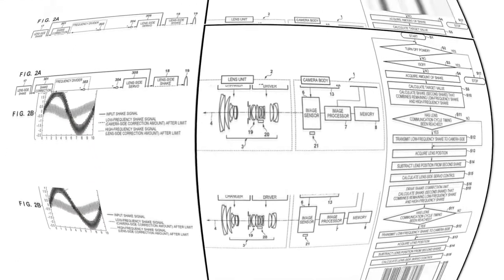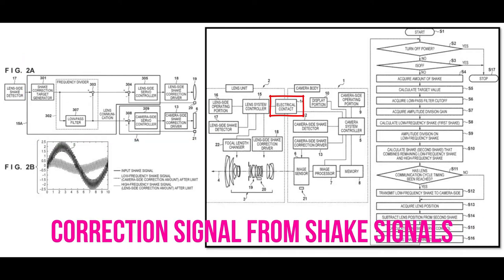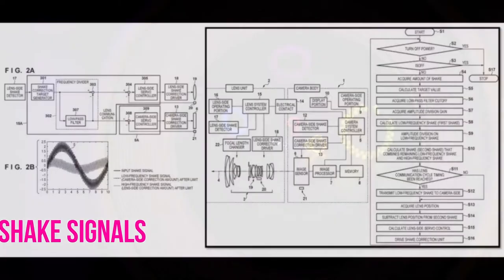Connected circuitry explains the dependencies and their functions. Both units are connected with the electrical contact. Core to this invention is to build correction signal from low frequency band signals.